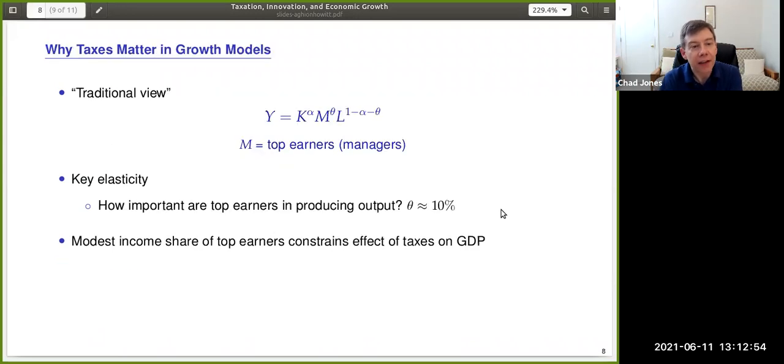How does that affect economic growth and long-run living standards? Well, let me start out with the traditional view and then explain what modern growth theory brings to the table. The traditional view might be illustrated by this production function where output depends on capital and labor, also on top earners. Let me call them managers just to give it a letter M. We saw from the previous slide that the top earners respond to taxes. So there's some elasticity there, but notice that the effect of that change on GDP in the long run is going to depend on this elasticity theta.